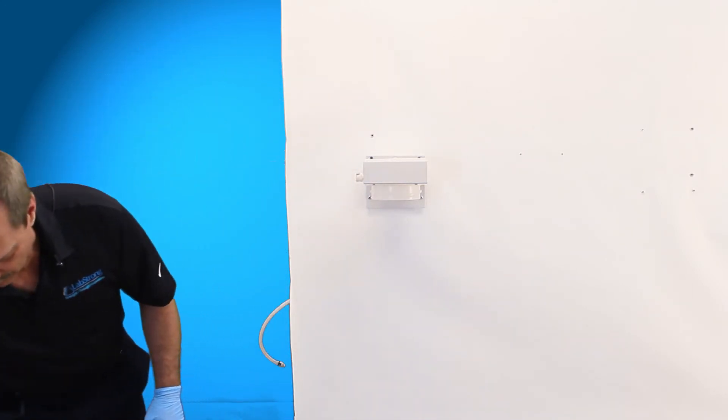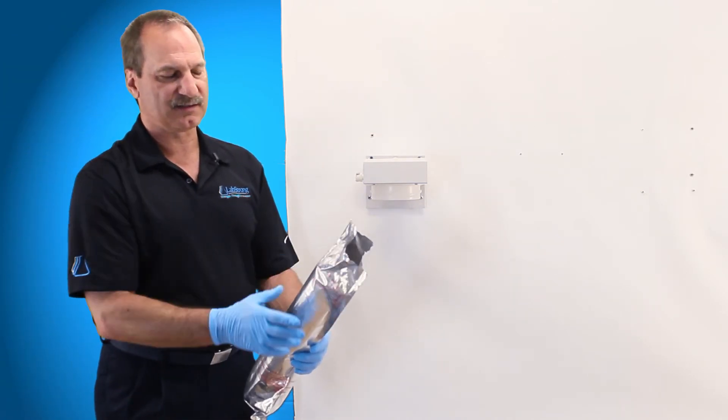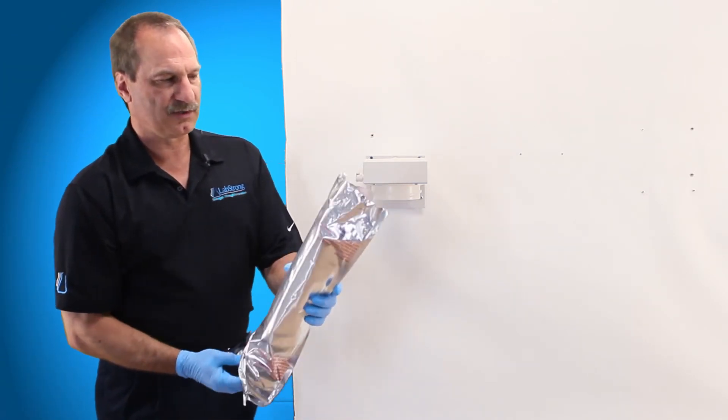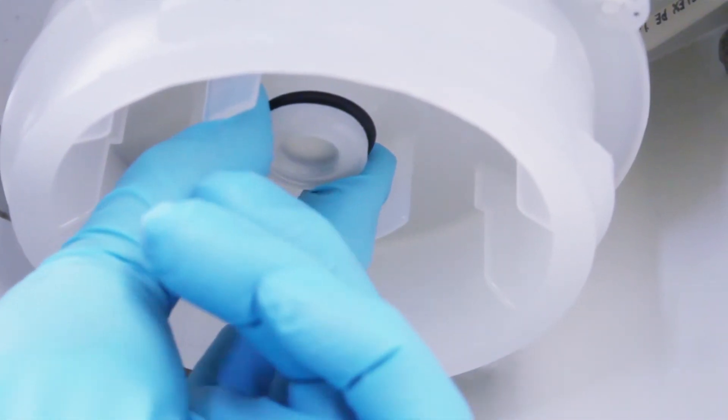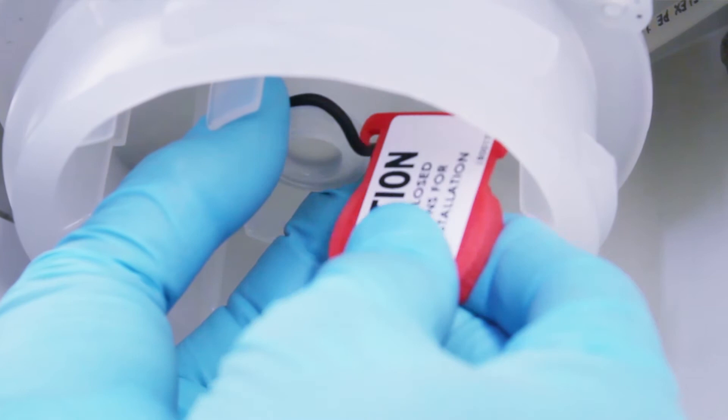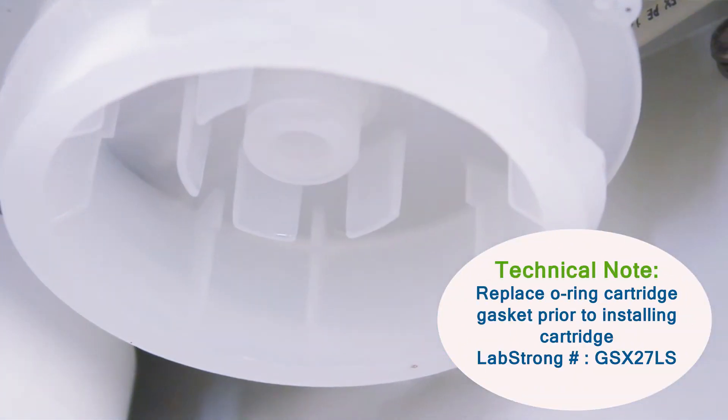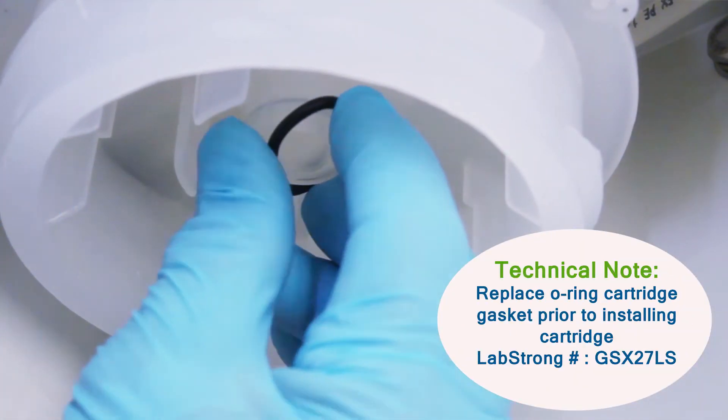Then you open up your bag that your cartridge comes in, slice that open, grab your cartridge out of there, take your old O-ring out, replace it with the new O-ring and throw your old O-ring away.